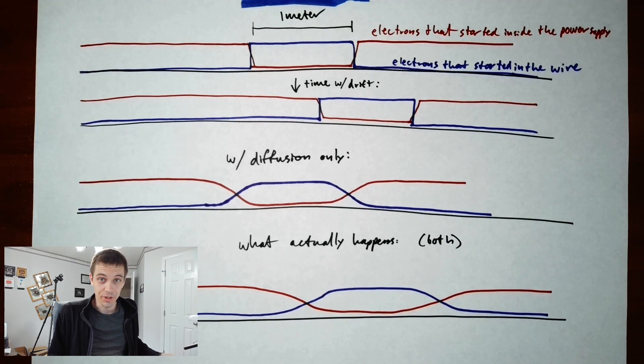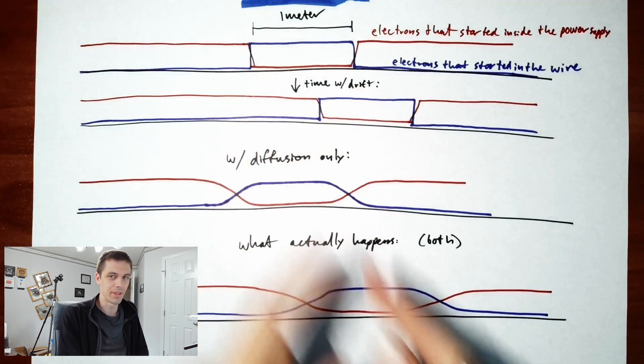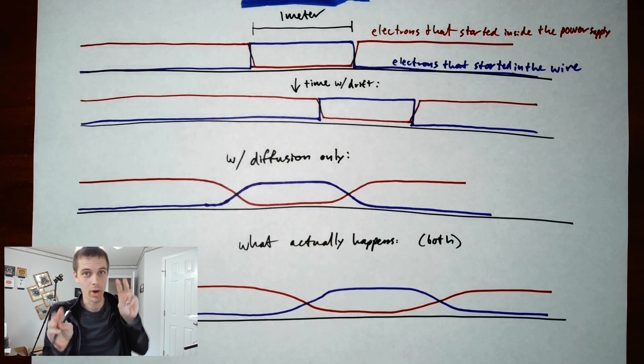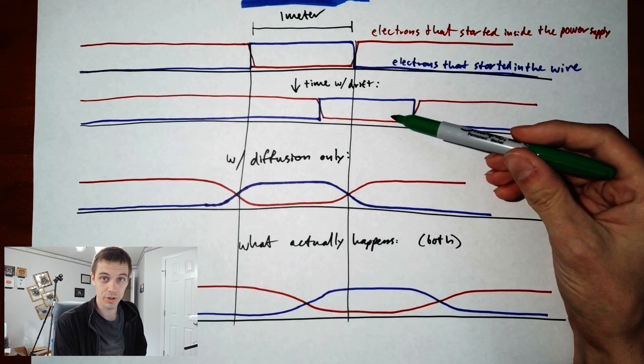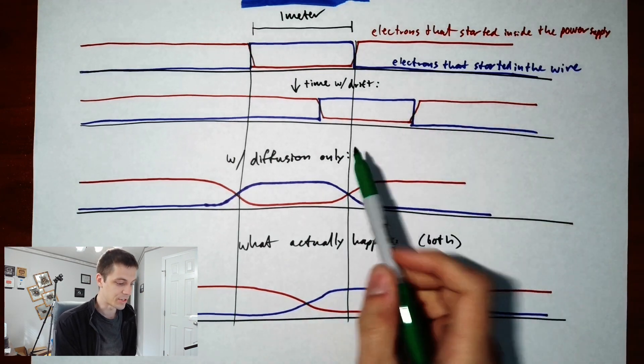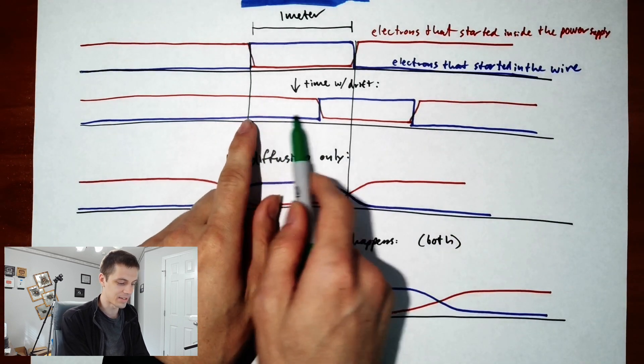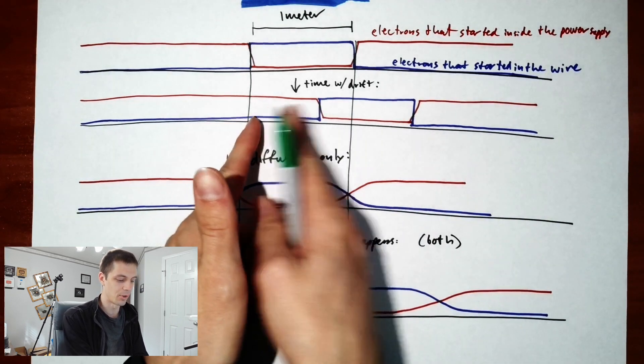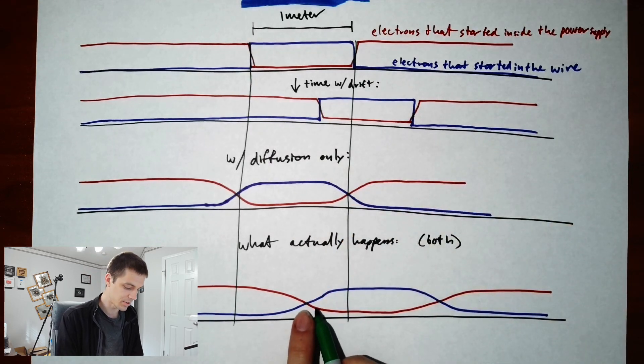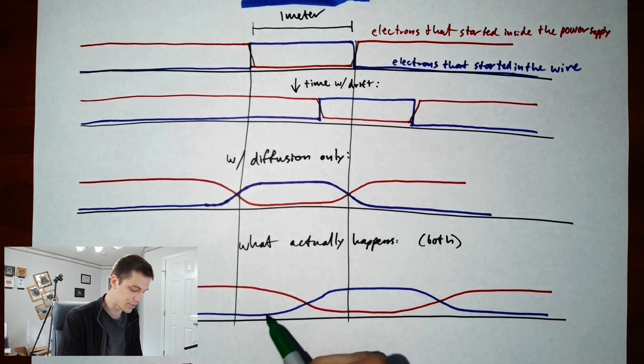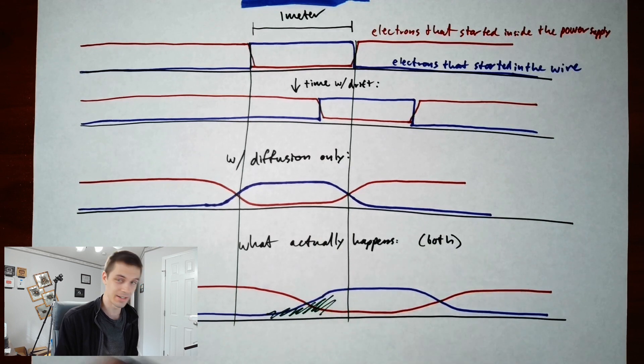In the real world, you have both drift and diffusion happening at once. The bulk of electrons that started inside the wire are shifting down while the edges are being blurred. If electrons were drifting purely, you could just say drift velocity times time equals wire length. But when the edge blurs, they've got to move quite a bit farther because you've got this whole tail down here that didn't used to exist.